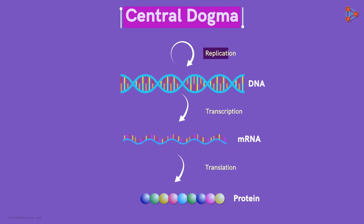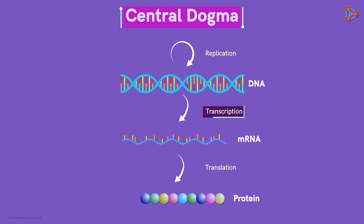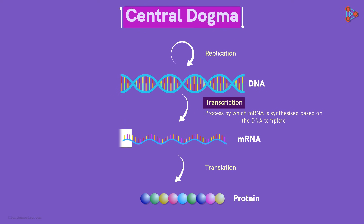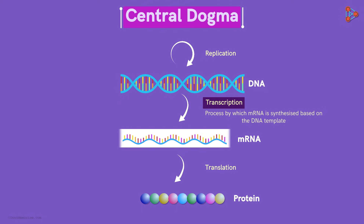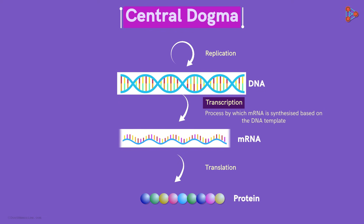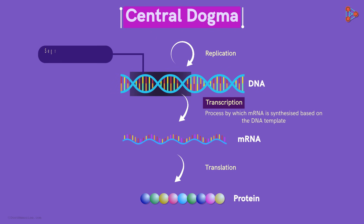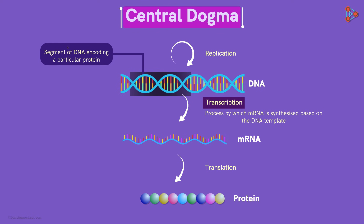We know that the replication process is semi-conservative in nature. So now our focus will be on the two processes, namely transcription and translation. Let's begin with transcription first. As we can see here, the process in which mRNA is synthesized based on the parent DNA template is called transcription. The part or segment of DNA which encodes for a particular protein is called a gene.